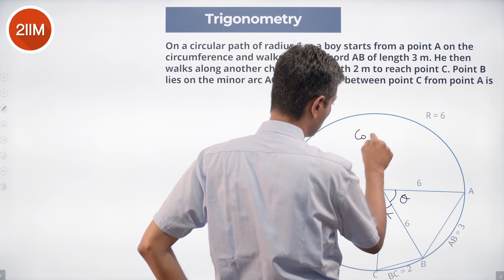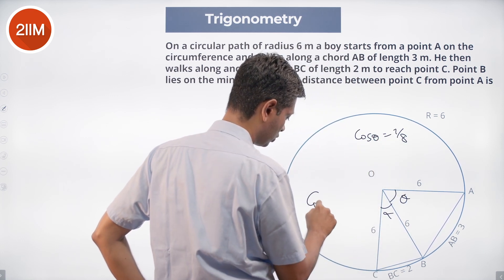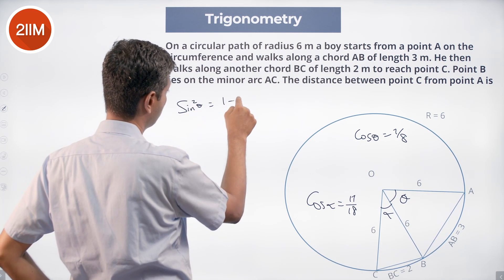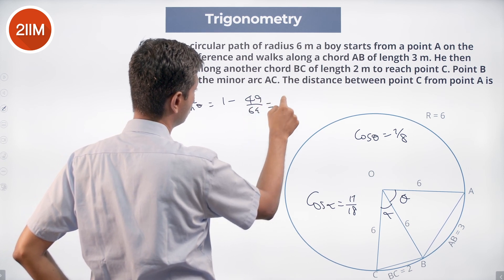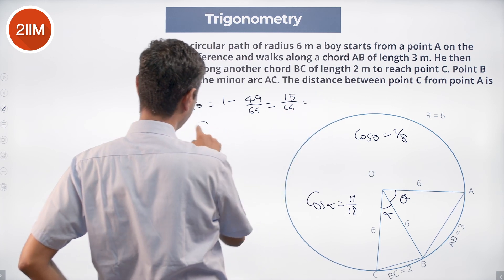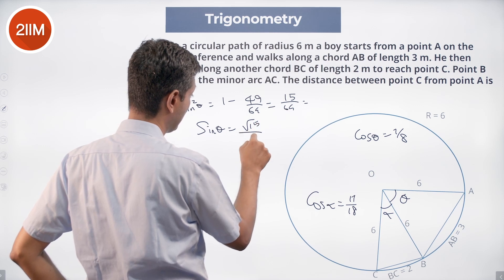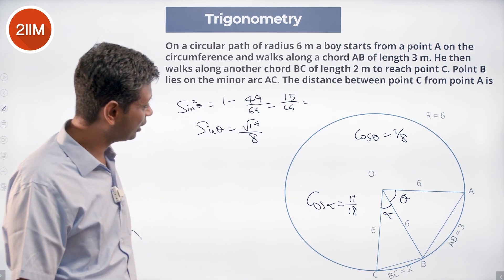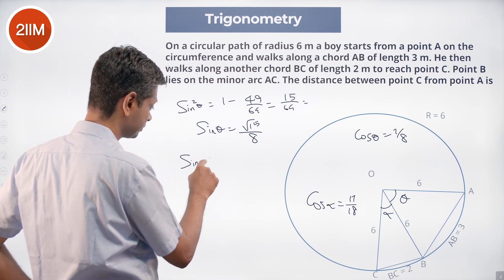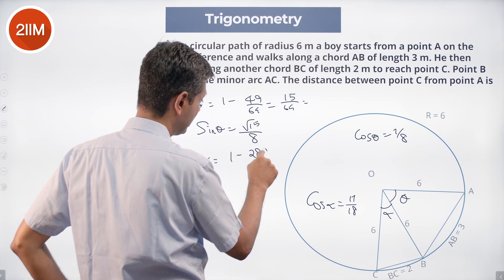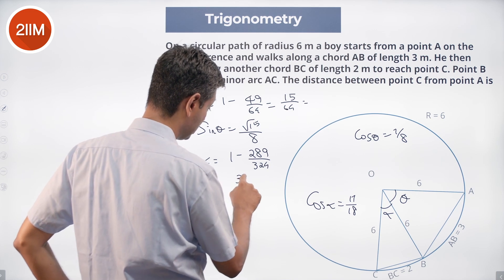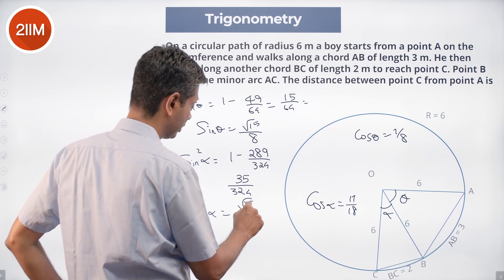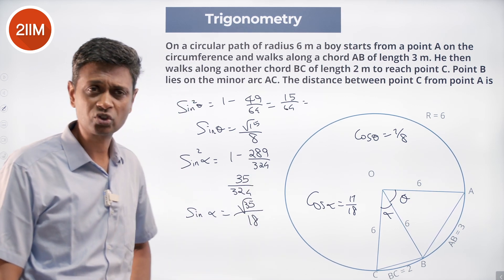Let's call angle AOB as theta and angle BOC as alpha. Cos θ = 7/8, cos α = 17/18. Sin²θ = 1 − 49/64 = 15/64, so sin θ = √15/8. Sin²α = 1 − 289/324 = 35/324, so sin α = √35/18.